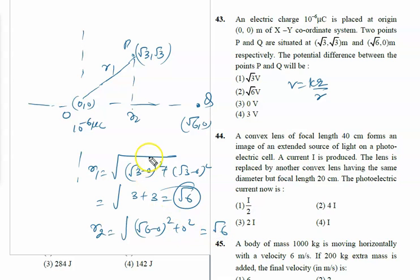Since r1 equals r2, the potential at P equals the potential at Q. Therefore, Vp - Vq = 0. The answer is option 3.